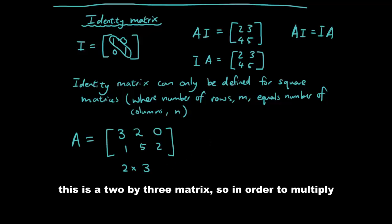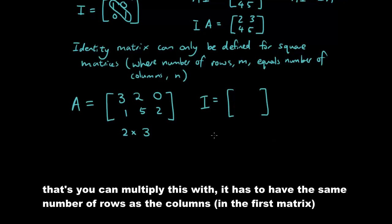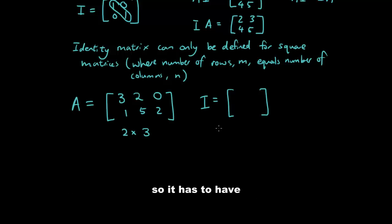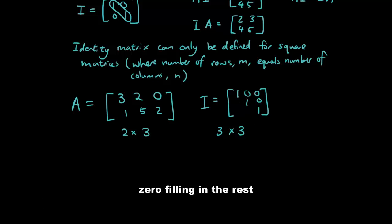Now obviously this is a 2 by 3 matrix. So in order to multiply, in order to set up an identity matrix that you can multiply this with, it has to have the same number of rows as the columns. So it has to have 3 by 3.